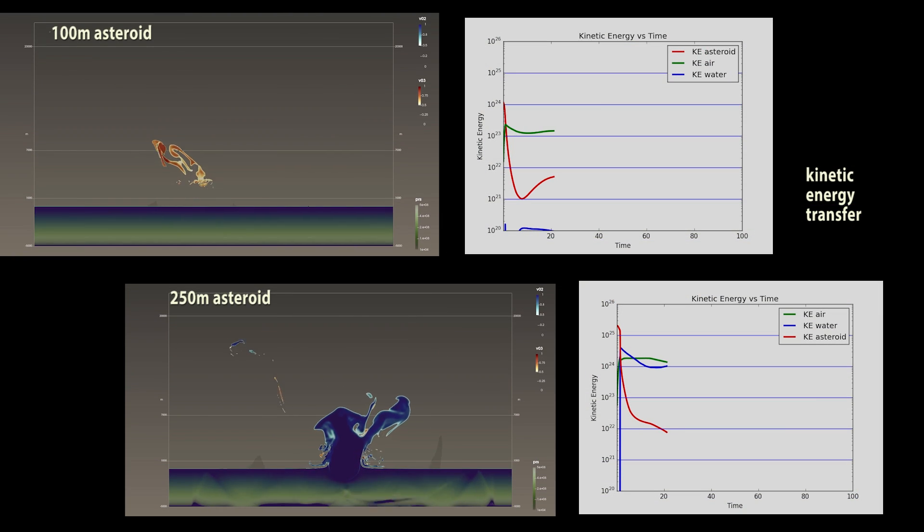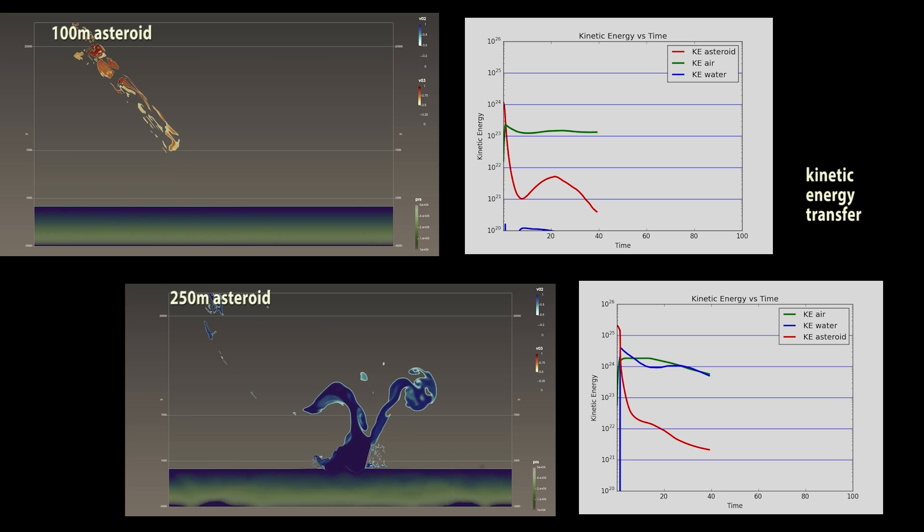Here we see two cases varying asteroid size, on the right a plot showing the transfer of kinetic energy from the asteroid to the water and air.